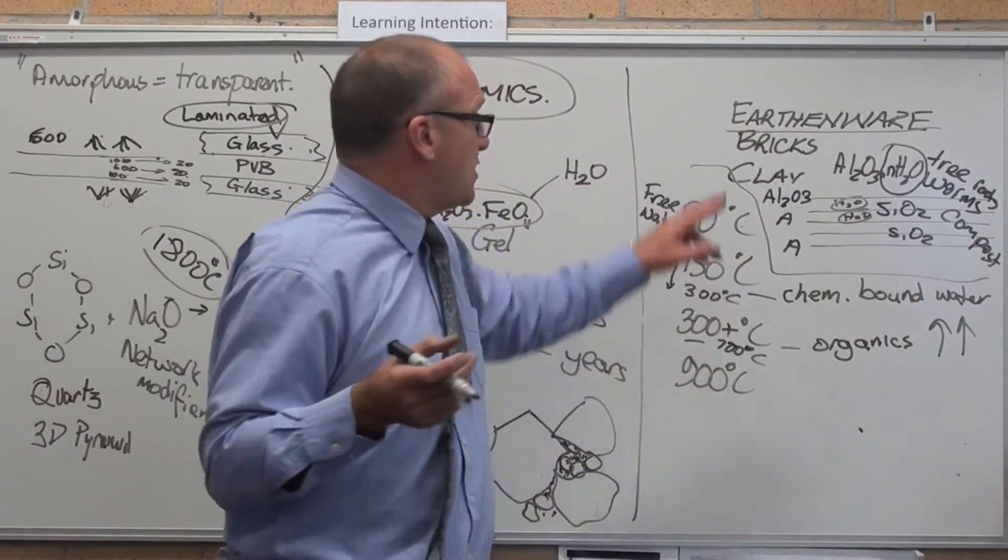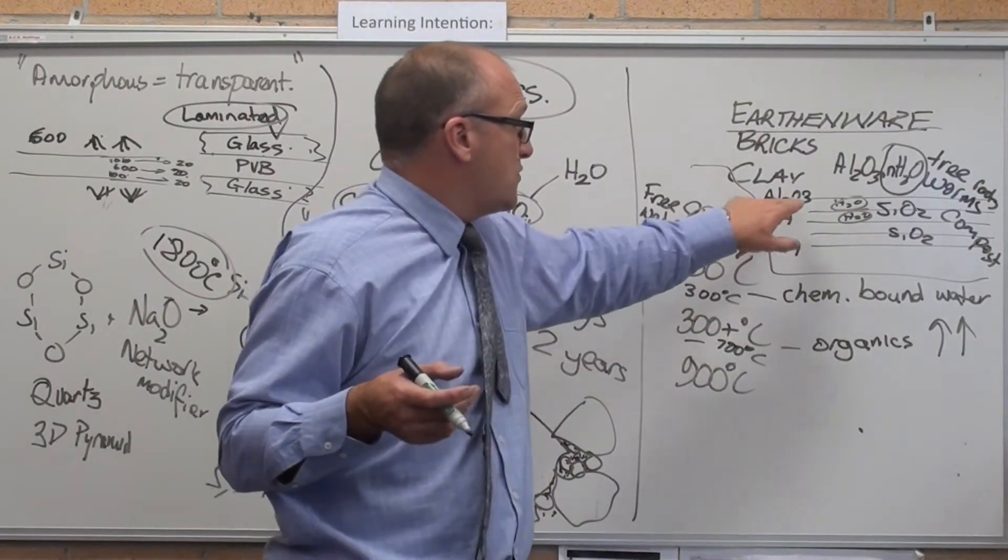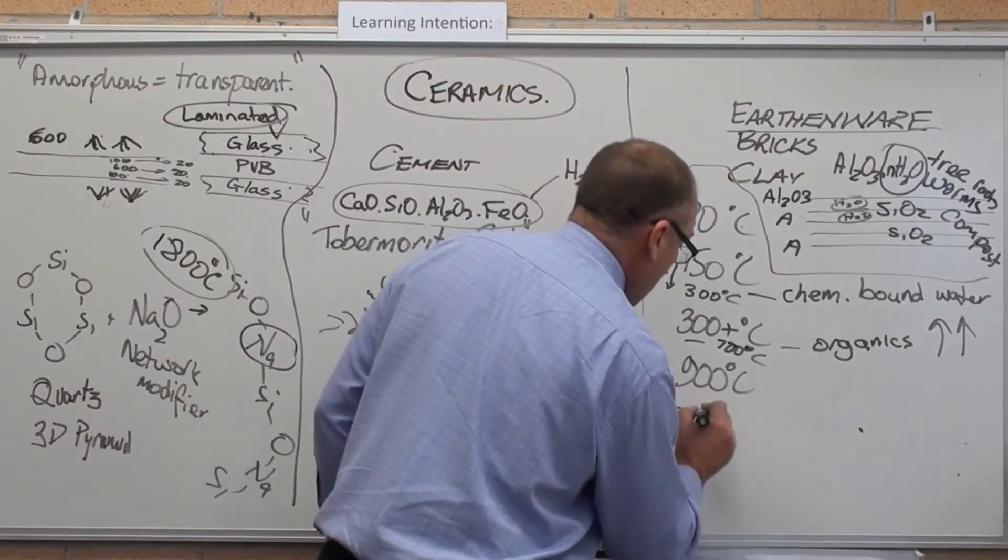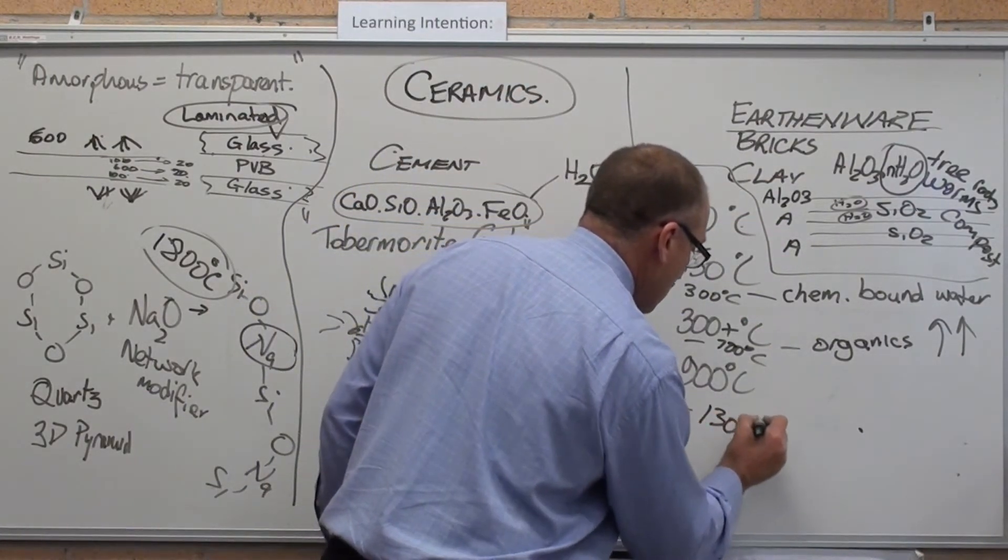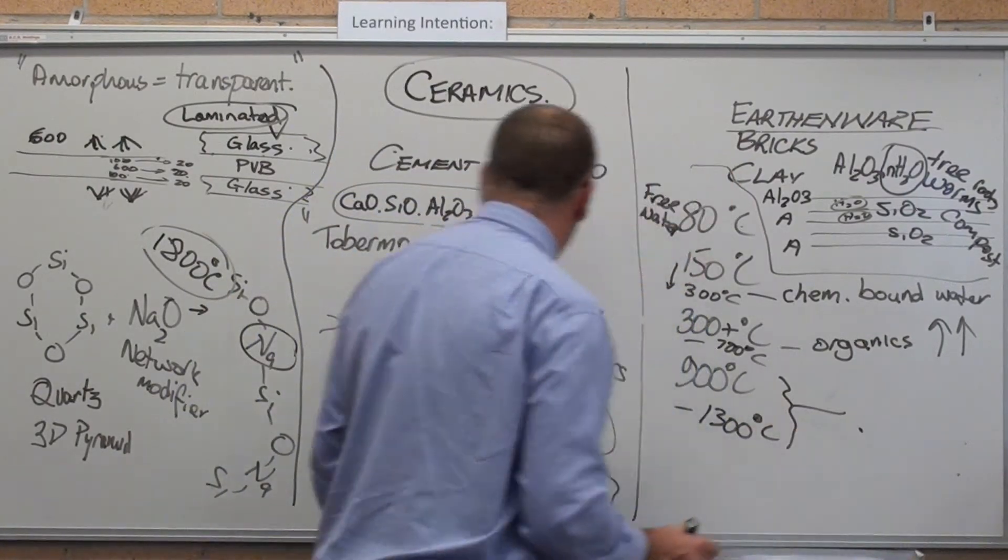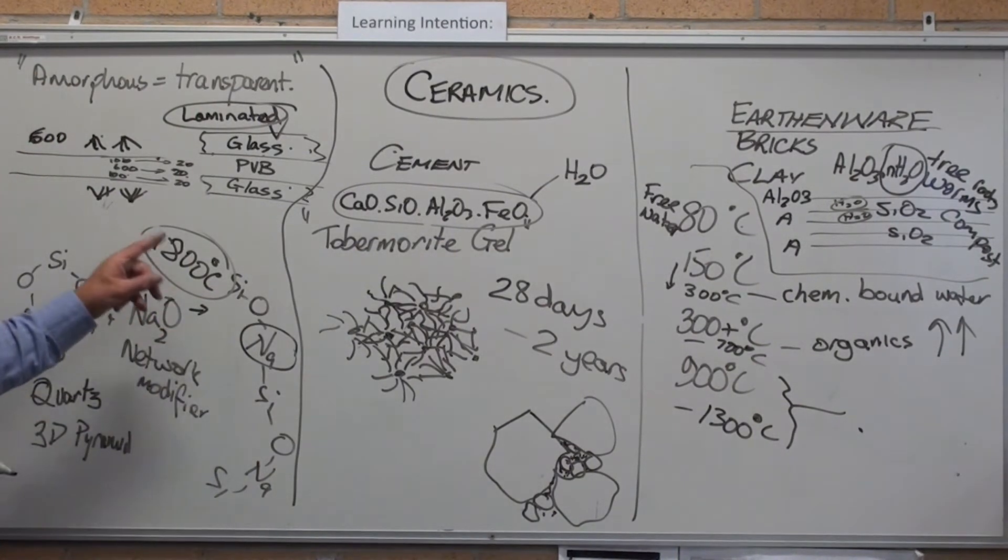And the final stage in forming earthenware, now what you've got at 700 degrees is you've just got alumina and silica. Now you heat it up to 900 degrees to 1300 degrees. And what happens there is this. The alumina and silica all melt together and form a glass.